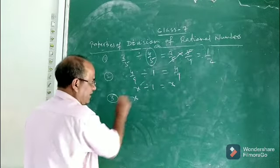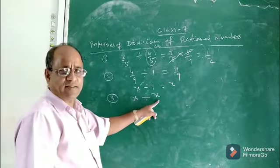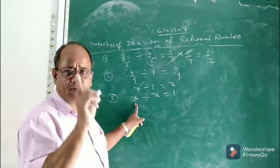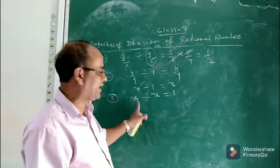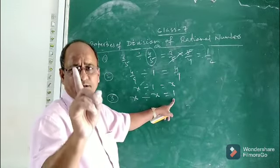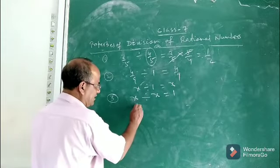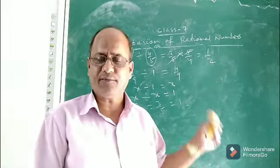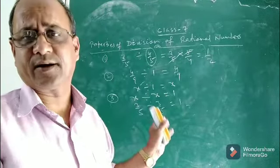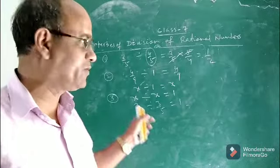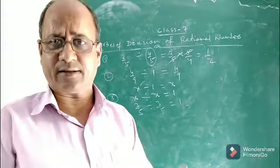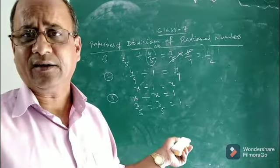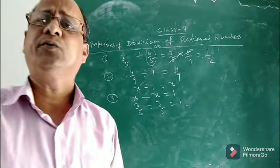The third property: suppose a rational number x is divided by itself. The result will be 1. Any rational number divided by itself gives the quotient 1, so x by x equals 1. For example, 3 by 5 divided by 3 by 5 is certainly 1. These are some properties of rational number division. We will discuss more properties in the next class. I hope you understood the process and the properties. Thank you.